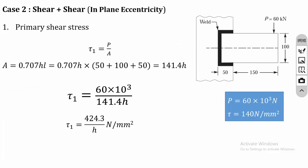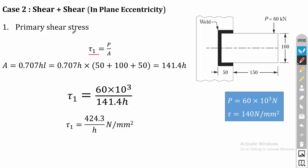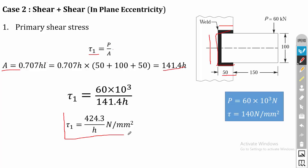Starting with the primary stress — the primary shear stress tau1 is equal to P divided by A. The equation for calculating area is 0.707H multiplied by L, where L is the length of the weld. Here the length of the weld is 50 plus 100 plus 50, giving 141.4H. Substituting the values: tau1 equals 16 × 10³ divided by 141.4H, which gives tau1 = 424.3 / H N/mm².